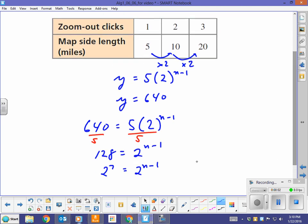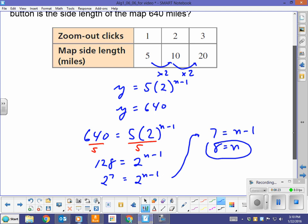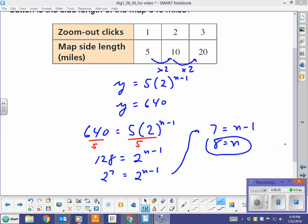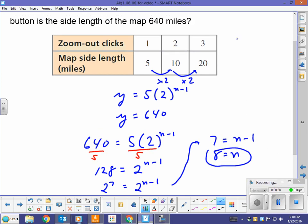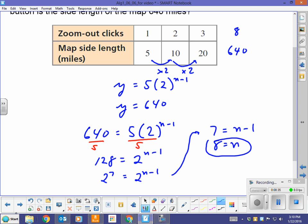So that makes things nice and easy for us. I'm going to come up here now and say, 7 equals n minus 1. Then if I add 1 to both sides, 8 equals n. And there it is. At 8 clicks, the side of the map will be 640 miles.